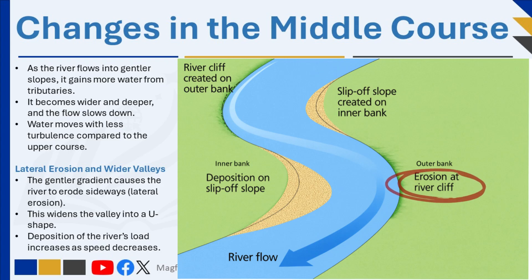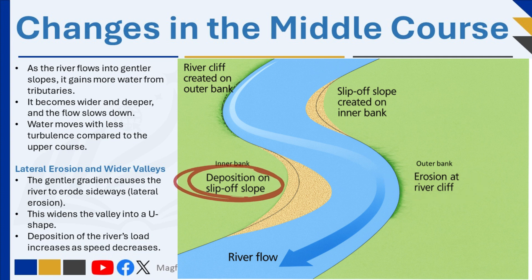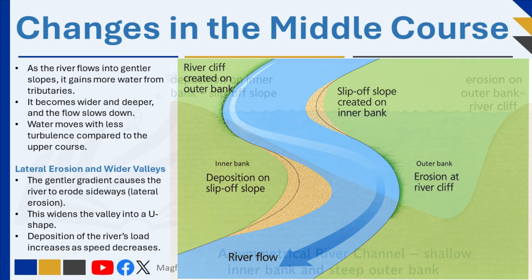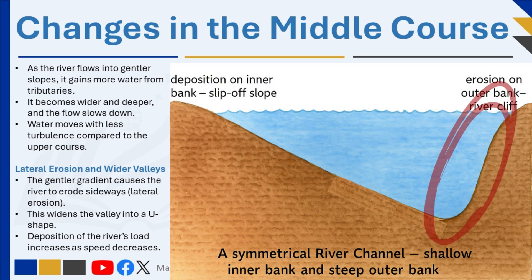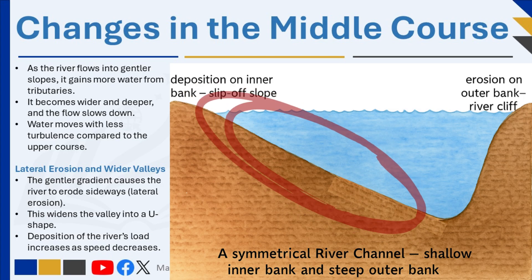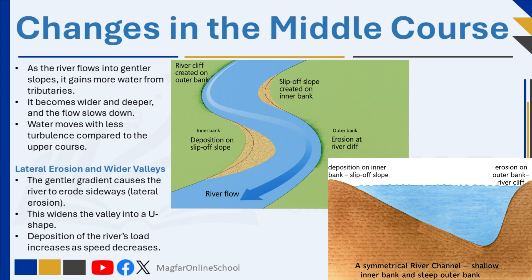The middle course may also include river cliffs on the outside of bends and slip-off slopes where sediment is deposited on the inside. On the outer bend, the current is fastest and has the most energy — this fast-moving water erodes the bank through hydraulic action and abrasion, carving a steep, often vertical face called a river cliff. On the inner bend, the slower current loses energy and drops its sand and gravel, building a gentle beach-like ramp known as a slip-off slope or point bar. Together, these features show how erosion and deposition work side by side.